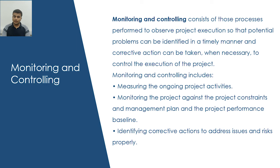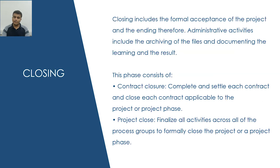The fourth step is monitoring and controlling. Monitoring and controlling consists of those processes performed to observe project execution so that potential problems can be identified in a timely manner and corrective action can be taken when necessary to control the execution of the project. This includes measuring the ongoing project activities, monitoring the project against the project constraints, management plan and performance baseline, and identifying corrective actions to address issues and risks properly.